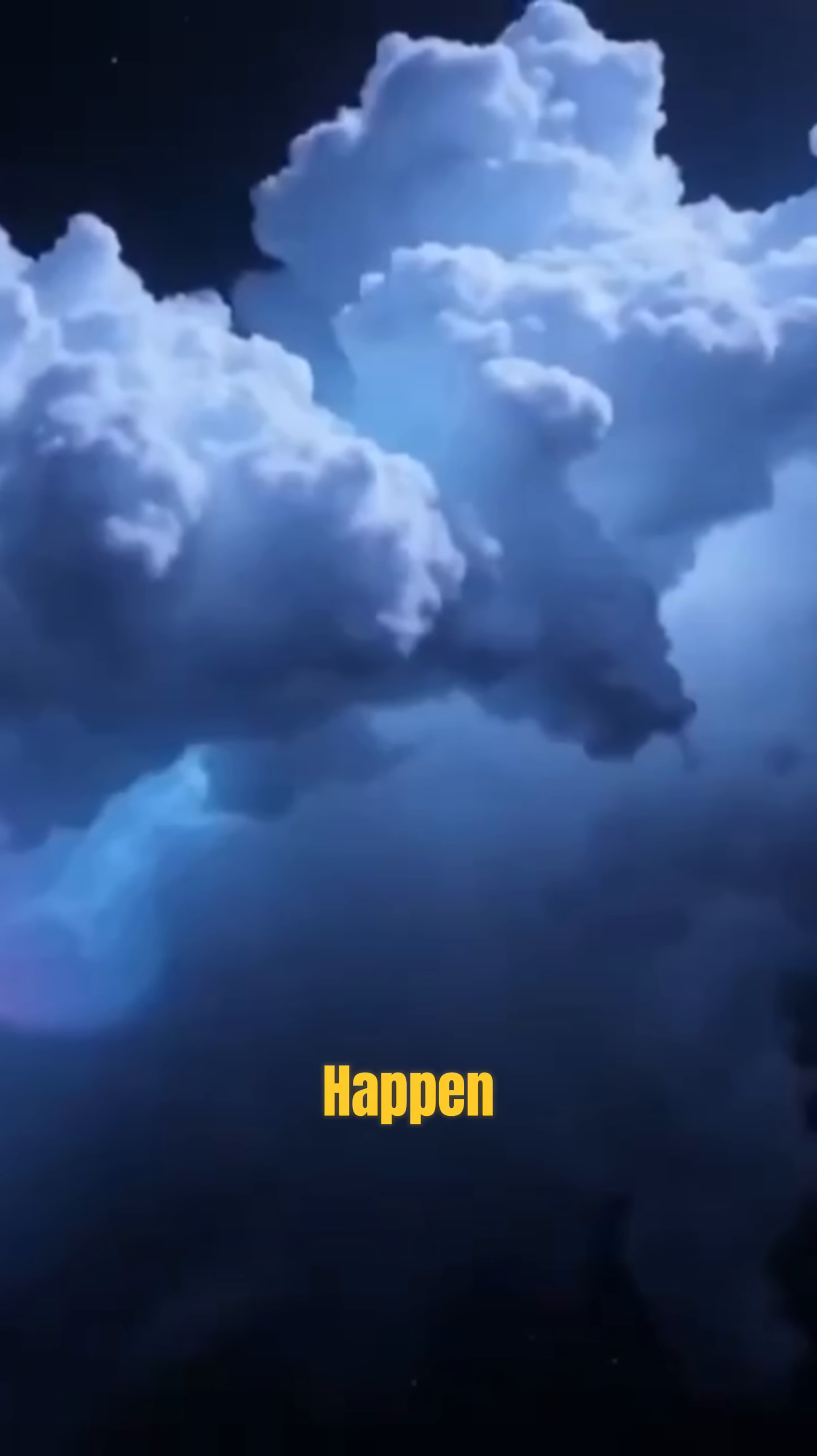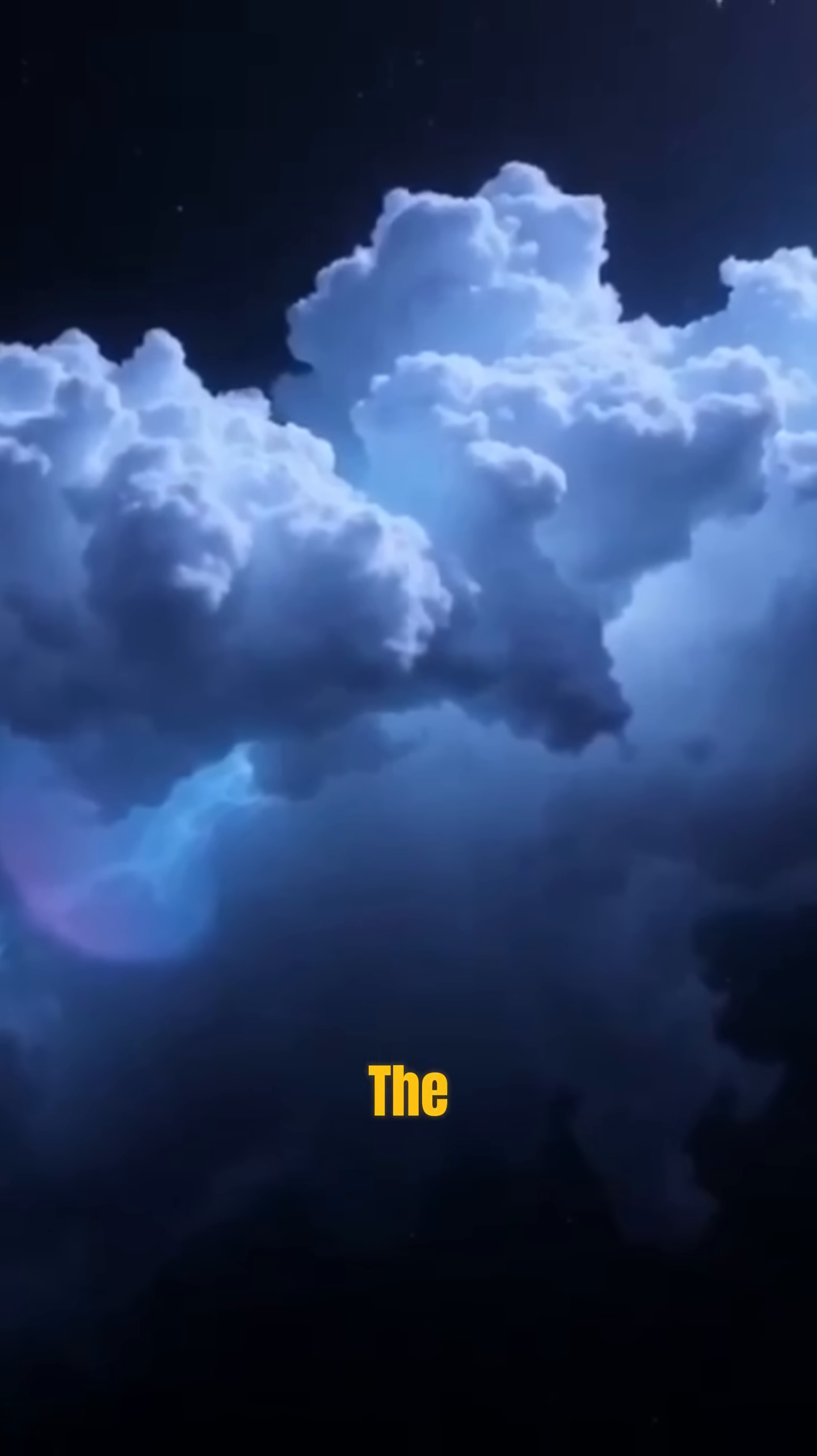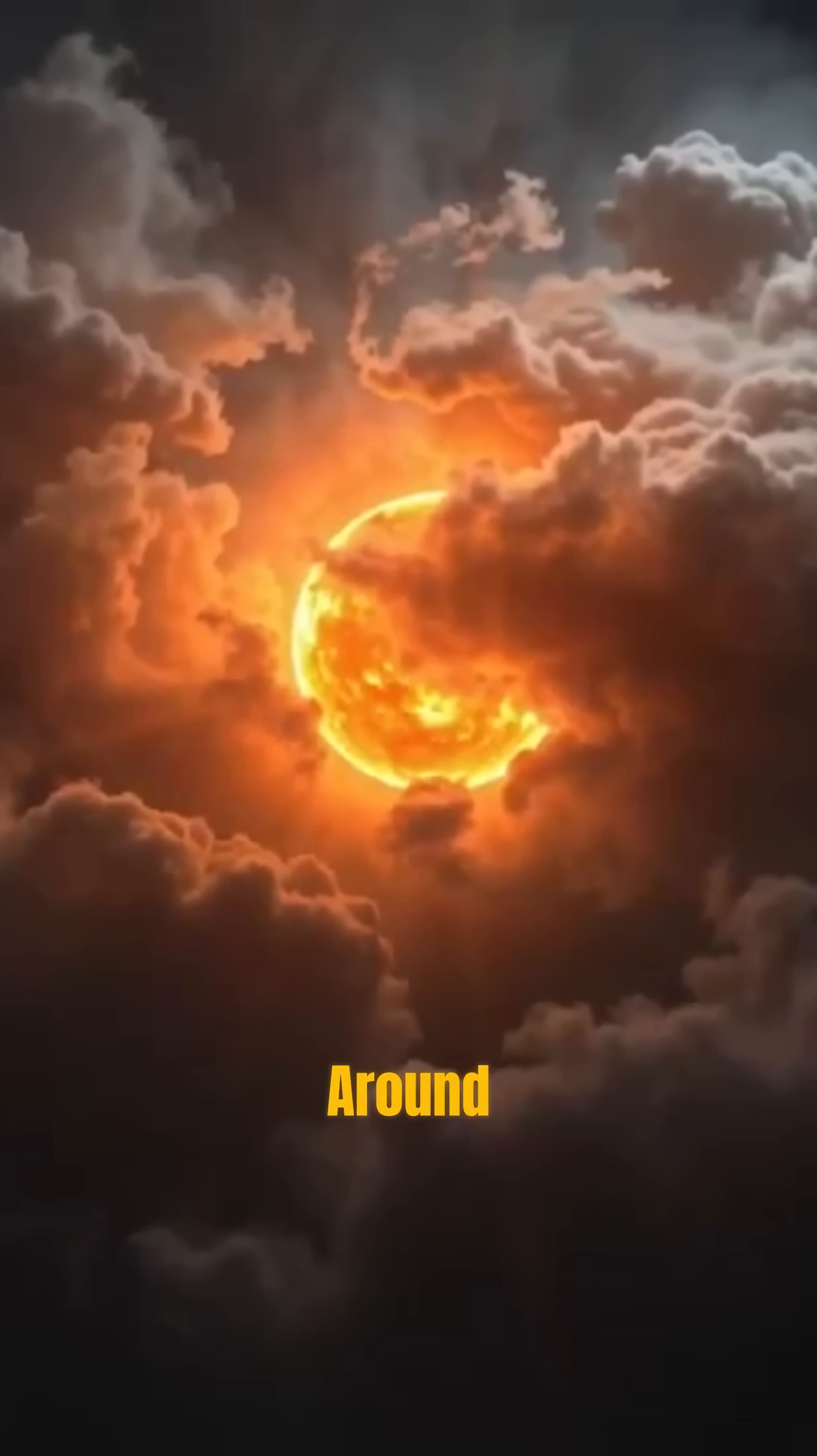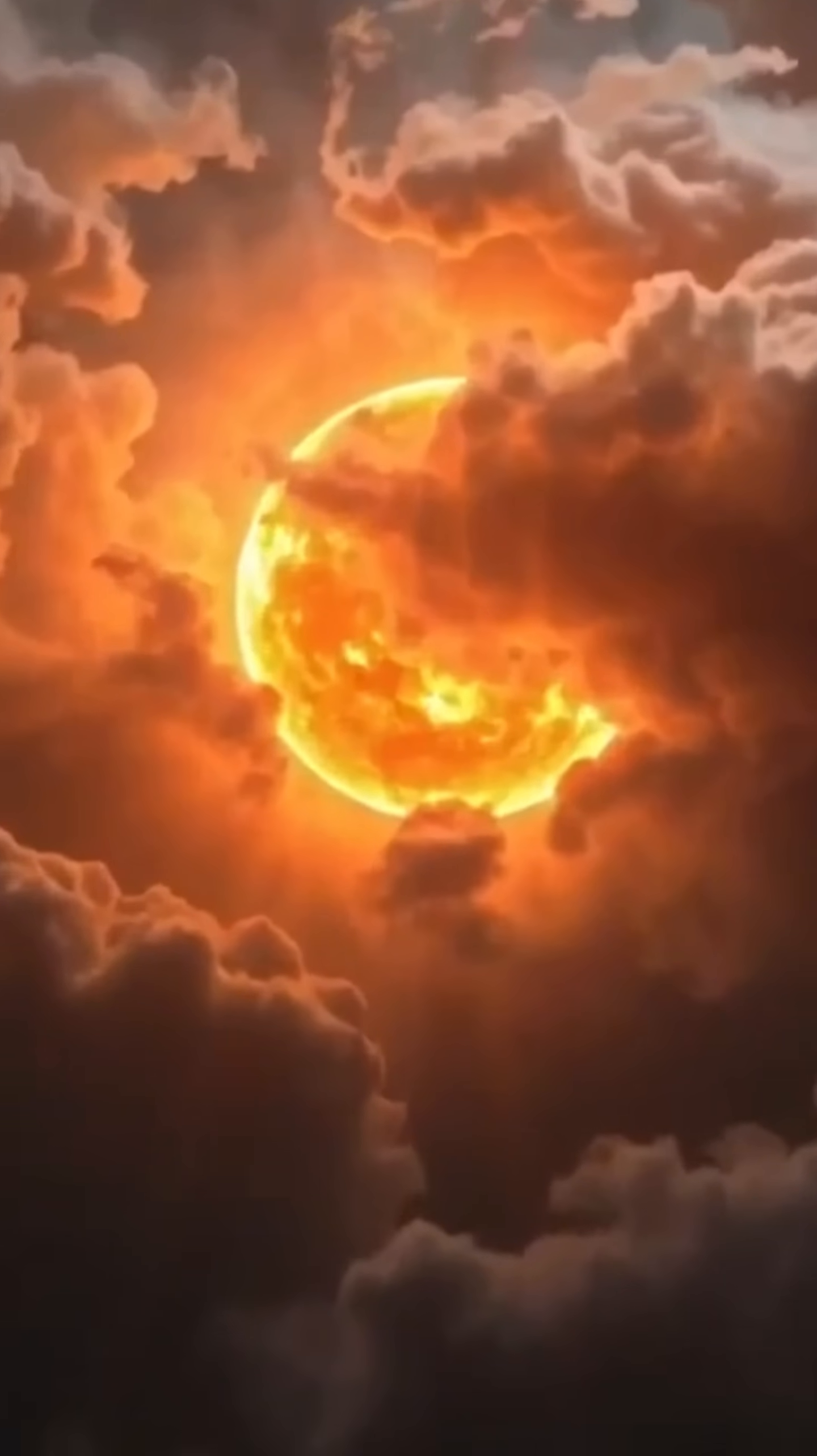It didn't happen overnight. It took tens of millions of years. But when it finally ignited, the sun became a small, stable furnace in the middle of cosmic chaos. Around it, the leftover debris started spinning. Dust and rocks colliding, sticking together, merging.